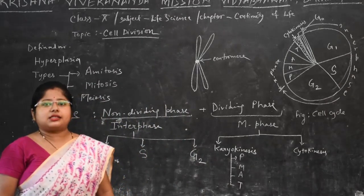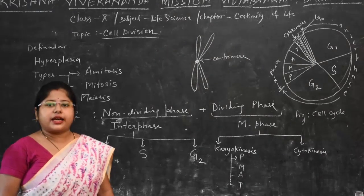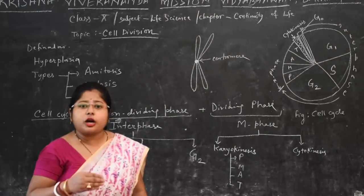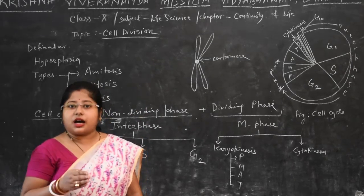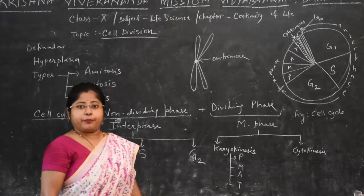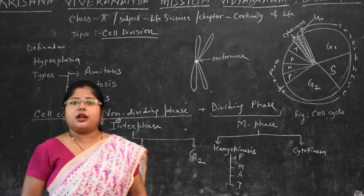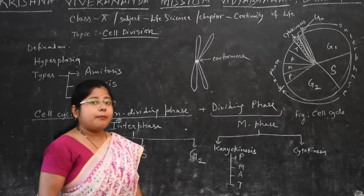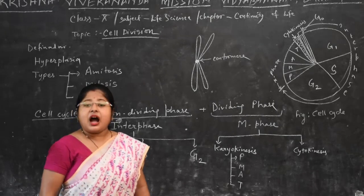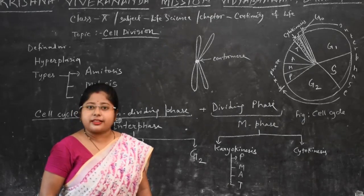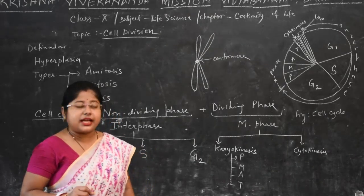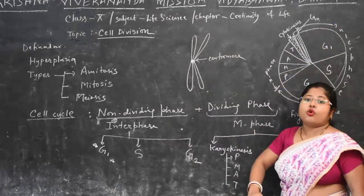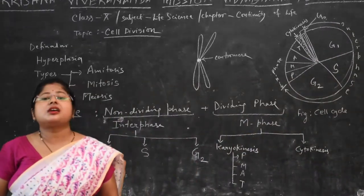The G0 phase is often known as the quiescent stage of the cell cycle. If any cell enters this quiescent stage, it will stop dividing. Common examples are nerve cells and muscle cells, which never divide — their number remains the same from birth till death. Once a cell enters G0 phase, it gets differentiated and performs its particular function.